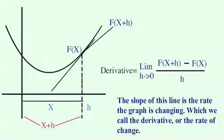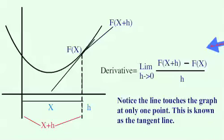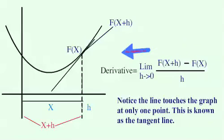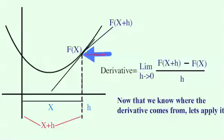Also commonly referred to as the rate of change. Notice that the line touches the graph at only one point — this is what we call a tangent line. So now that we know where the derivative comes from, let's look at applying it.